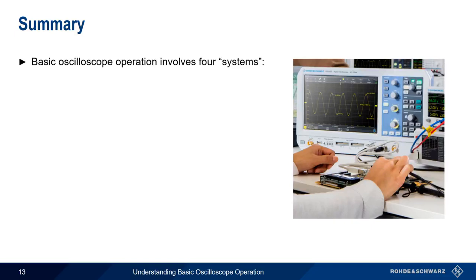Let's summarize what we've learned. Basic oscilloscope operation involves four main systems. The vertical system can be used to scale and position the waveform vertically.